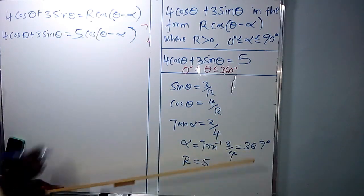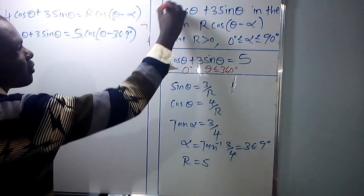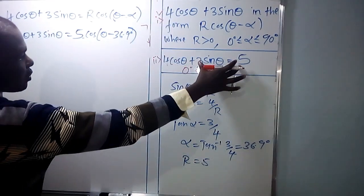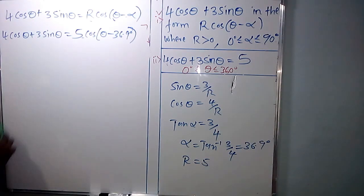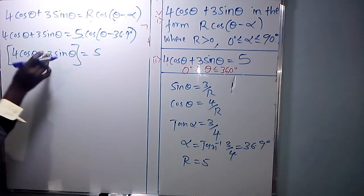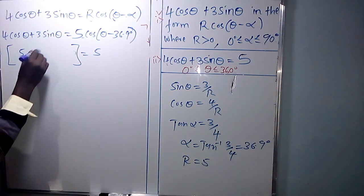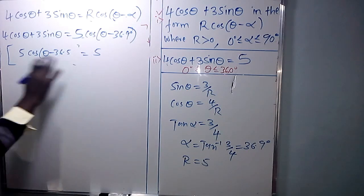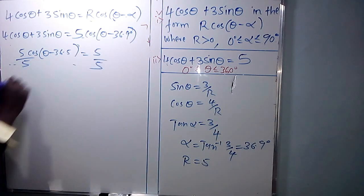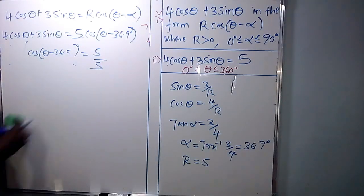Now having expressed that equation in that form, we solve 4 cos theta plus 3 sin theta equals 5. Replacing 4 cos theta plus 3 sin theta with its equivalent gives 5 cos(theta minus 36.9°) equals 5. Dividing both sides by 5 gives cos(theta minus 36.9°) equals 1.